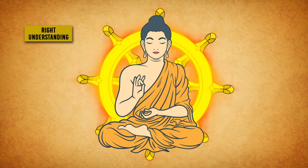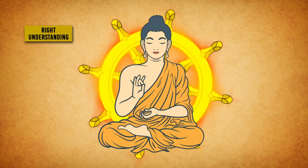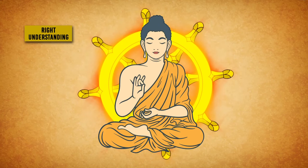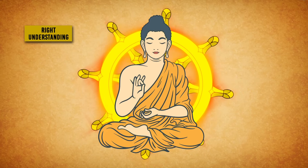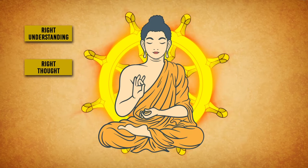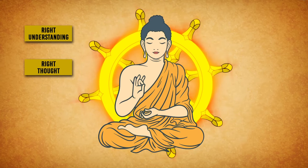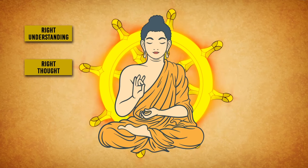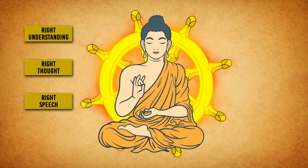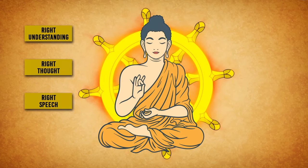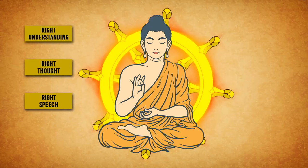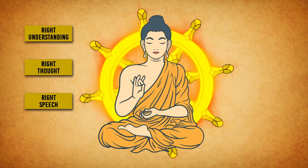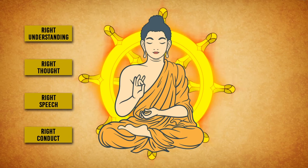1. Right Understanding — Understanding that the Four Noble Truths are noble and true. 2. Right Thought — Determining and resolving to practice Buddhist faith. 3. Right Speech — Avoiding slander, gossip, lying and all forms of untrue and abusive speech.